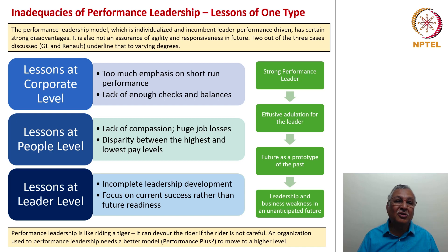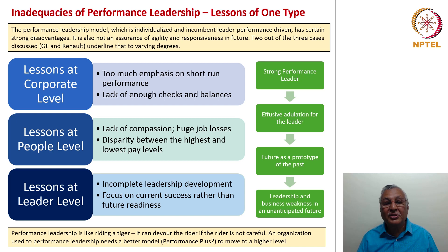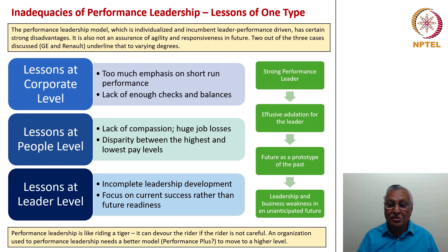The lessons at the corporate level include: too much emphasis on short-term performance and lack of enough checks and balances. At the people level: lack of compassion, huge job losses because cost cutting is seen as the primary driver for profitability, and disparity between the highest and lowest pay levels. At the leader level: incomplete leadership development and focus on current success rather than future readiness. Performance leadership is like riding a tiger — it can devour the rider if not careful. An organization used to performance leadership needs a better model — perhaps a performance-plus model to move to a higher level.